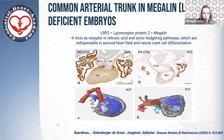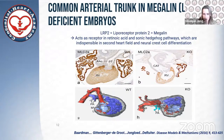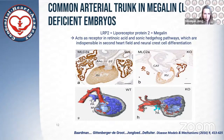Related to our work with the second heart field is the work in the megalin mouse — another mouse model that has increased our understanding of common arterial trunk development. Megalin is in fact a lipoprotein receptor protein, but it also acts as a receptor in retinoic acid and sonic hedgehog pathways, which are two pathways indispensable in second heart field and neural crest cell differentiation. We studied the effect of megalin knockout on the heart and found different outflow tract malformations, including common arterial trunk.